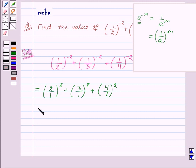So this will be equal to 2 to the power 2 plus 3 to the power 2 plus 4 to the power 2. That is 4 plus 9 plus 16 which in turn is equal to 29.